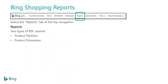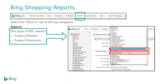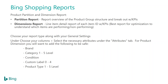Bing Shopping Campaigns also has two new reports within the actual reporting tab. When you go into the UI and click the reports tab at the top, you'll see two new reports: the partitions report and the dimensions report. The partitions report is basically an overview of the product group structure — breakouts of how everything is structured from the campaign down to the actual product group. It gives you all the KPIs from each product group. The dimensions report is similar to what we just went over in the UI, but with more detail and additional attributes available.